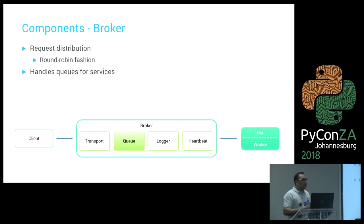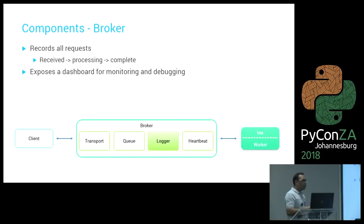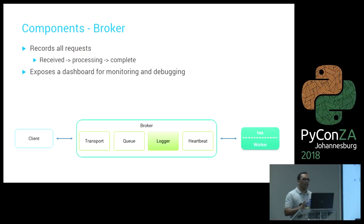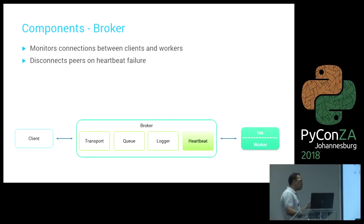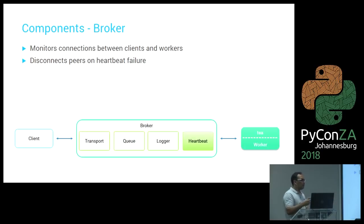The transport subsystem handles all connections, data transfer including serialization and deserialization, and broadcasts the broker's presence on the network using UDP multicast. The queue subsystem manages distribution of requests — if no worker is available when a request arrives, it queues the request and waits. The logger subsystem records every minute detail of every request: when received, when queued, when sent to a worker, and all timing. It also exposes a dashboard for monitoring and debugging. The heartbeat system monitors connections and reconnects peers on heartbeat failure according to configurable rules.